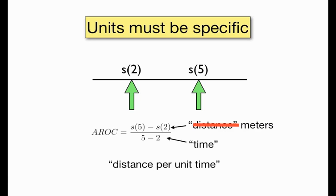So we always want to be specific. Not distance, but something like meters. Not time, but something like seconds. And then we get something nice and definite for our average velocity as well.